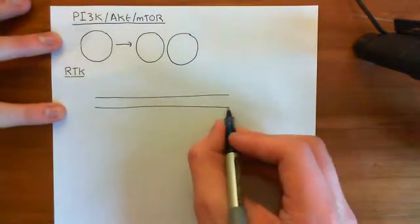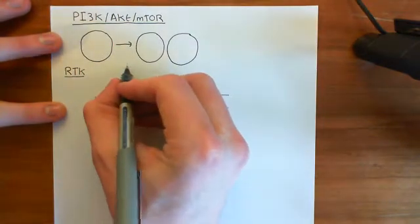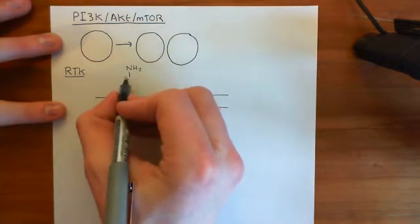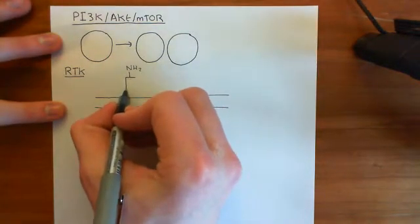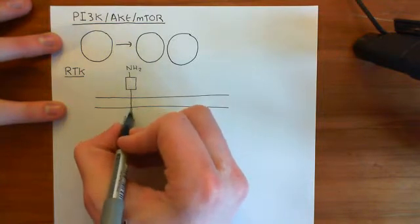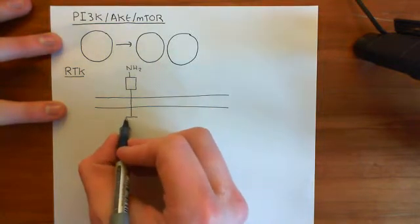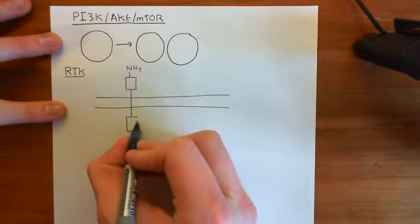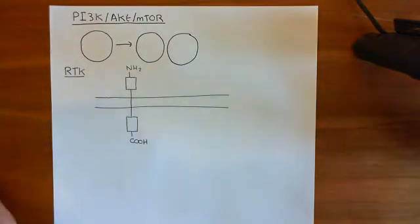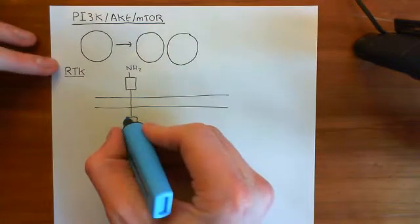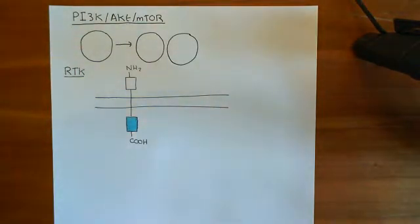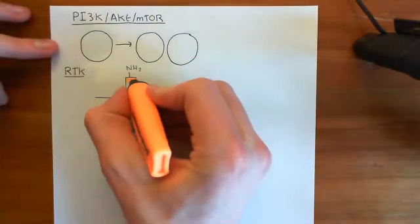Here is the phospholipid bilayer. Then we've got the amino group of our first receptor tyrosine kinase extracellularly. Then we've got our ligand binding domain, our membrane spanning alpha helix, and then our tyrosine kinase domain intracellularly, with the carboxylic acid terminal down here. So here is our tyrosine kinase domain, and here is our ligand binding domain in orange.